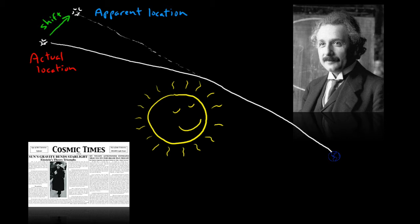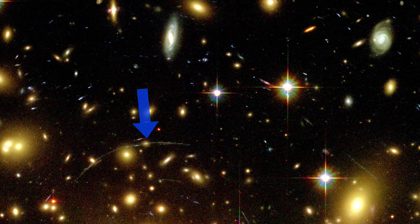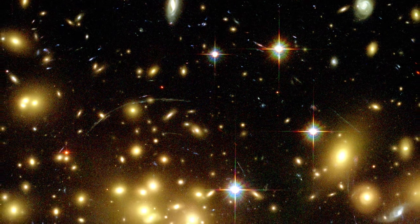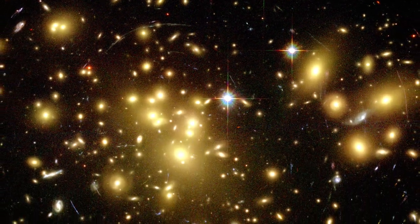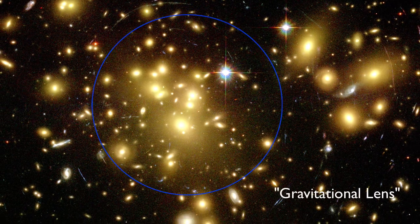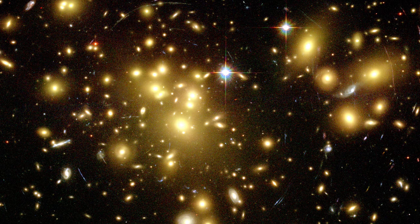Likewise, light from distant galaxies doesn't always travel to us in straight lines. Rather, it can get bent and distorted as it passes by galaxies in the foreground. Sometimes it gets bent by what appears as nothing, which is strong evidence that there's actually something, but we just can't see that something. We'll talk more about that in a future lesson when we get into dark matter.